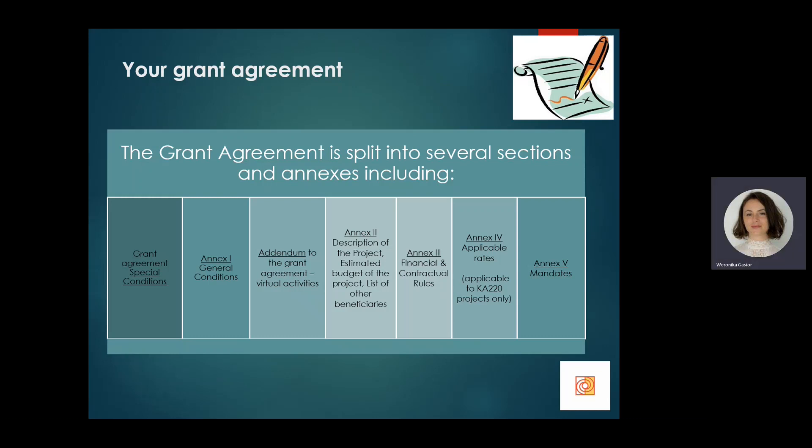The agreement is split into several sections and annexes, including the main body, special conditions, Annex 1 general conditions, an addendum to the grant agreement covering virtual activities, Annex 2 providing description of the project, estimated budget, and list of other beneficiaries, Annex 3 with financial and contractual rules, Annex 4 with applicable rates — applicable only to cooperation partnerships — and Annex 5 with mandates.